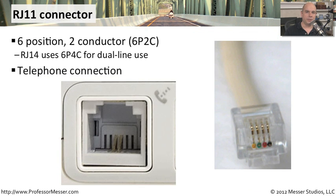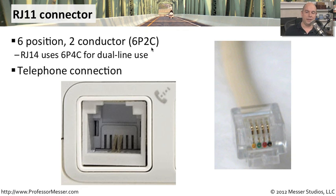Another common modular connector is the RJ11 connector. We most often see this associated with telephone-type connections. If you're plugging a telephone into the wall, it's probably an RJ11 connection. This is what we call a 6P2C connector, which means there are six positions inside of this connector, but we generally only wire two of those wires, because telephone lines only use two wires.